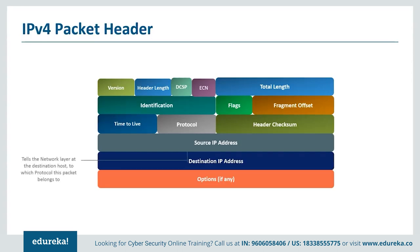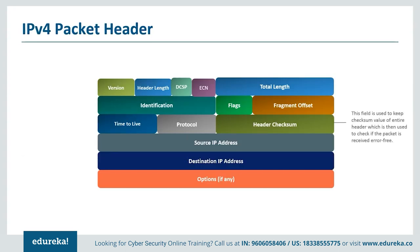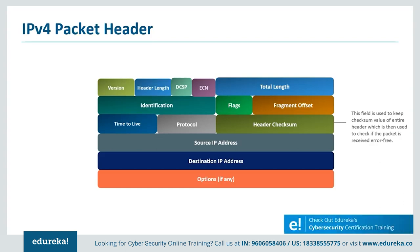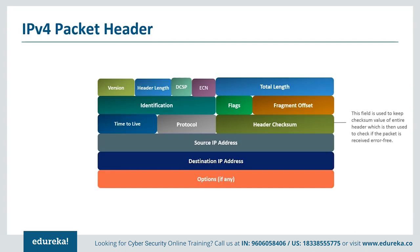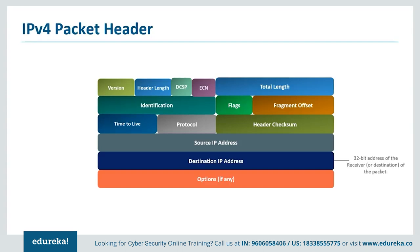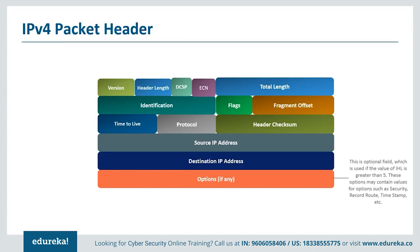The protocol field — or SAP, Service Access Point — indicates the type of transport packet. For example, 1 is ICMP, 2 is IGMP, 6 is TCP, and 17 means UDP. The header checksum is inserted by the sender and updated whenever the packet header is modified by a router, used to detect processing errors. Packets with an invalid checksum are discarded — think of it like a barcode: if it gives wrong information, you discard that packet. Finally, the source IP address is the original sender's IP, and the destination address is where the packet is headed.